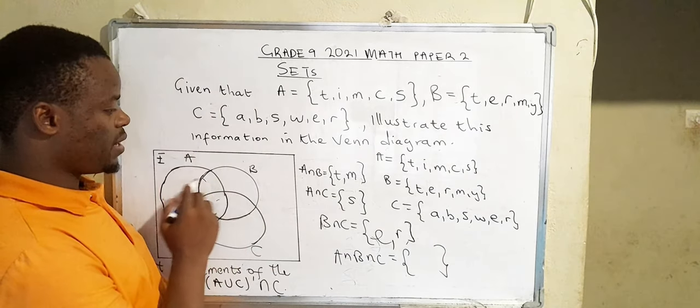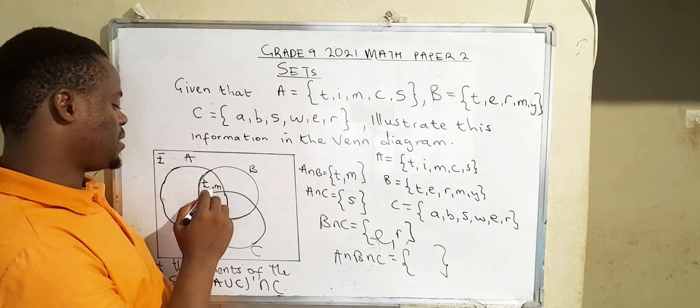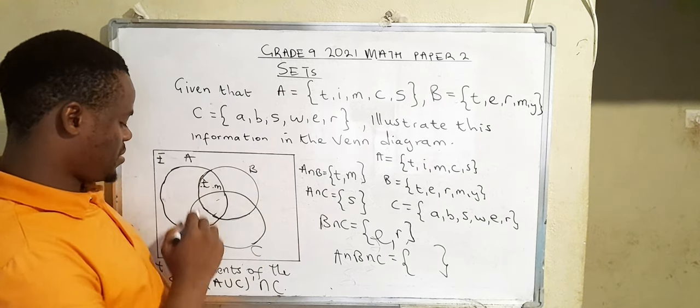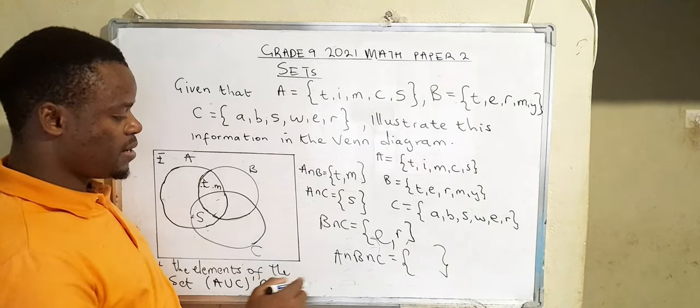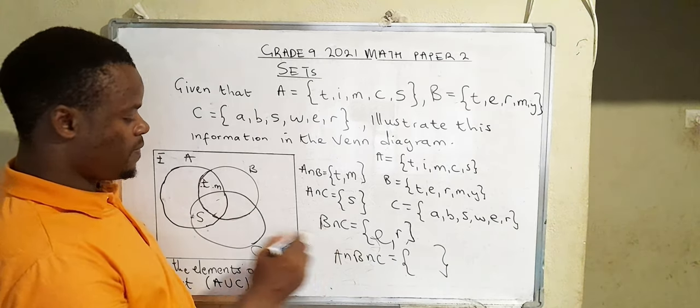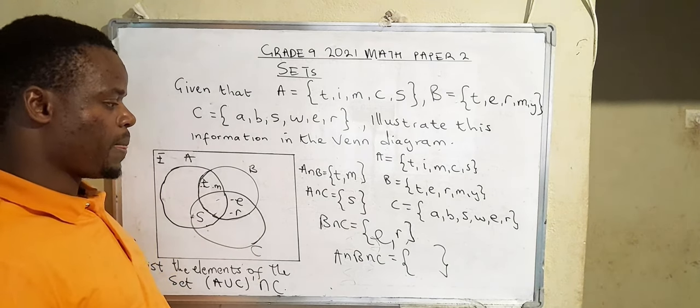Then A∩B here, we're going to indicate T and M. Then A∩C is here, that is S. Then B∩C, that is E and R.